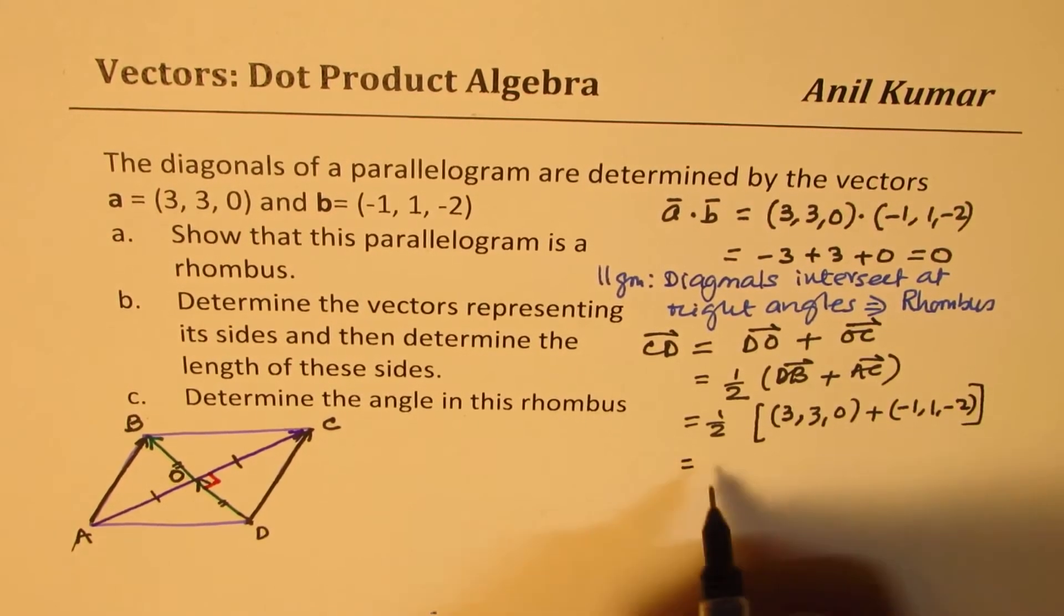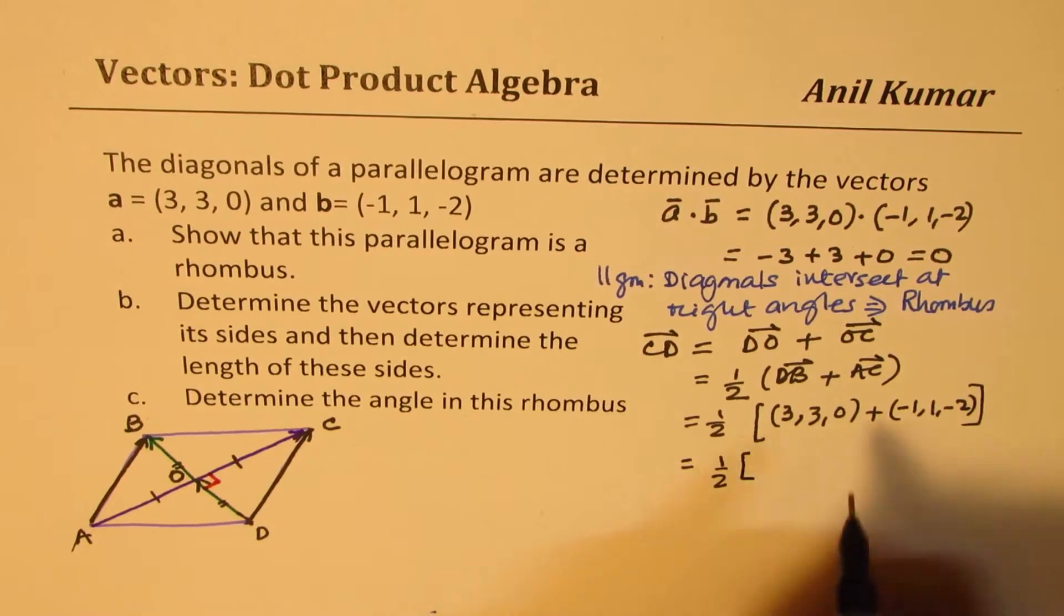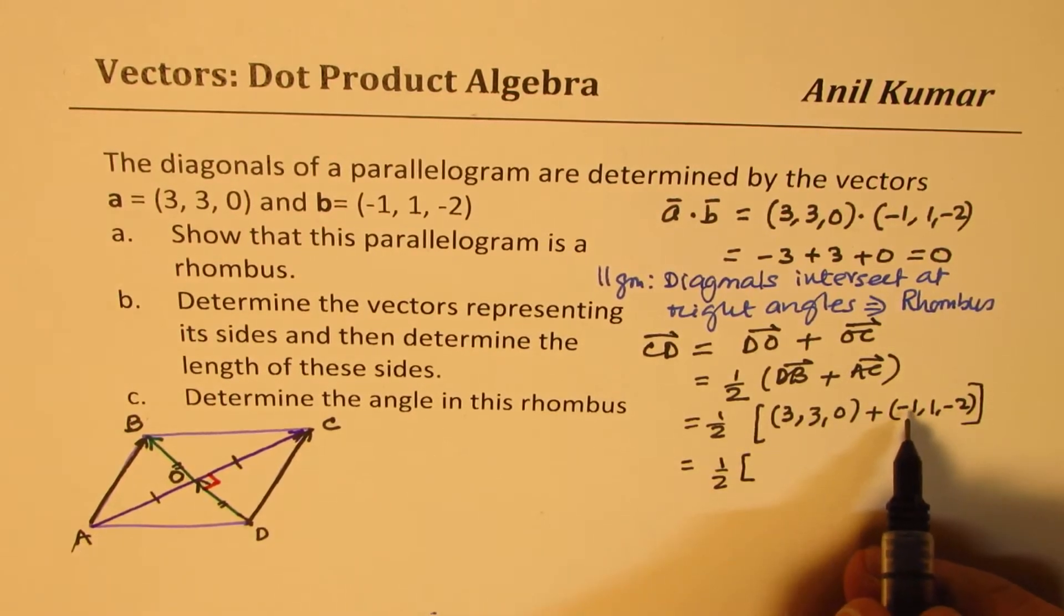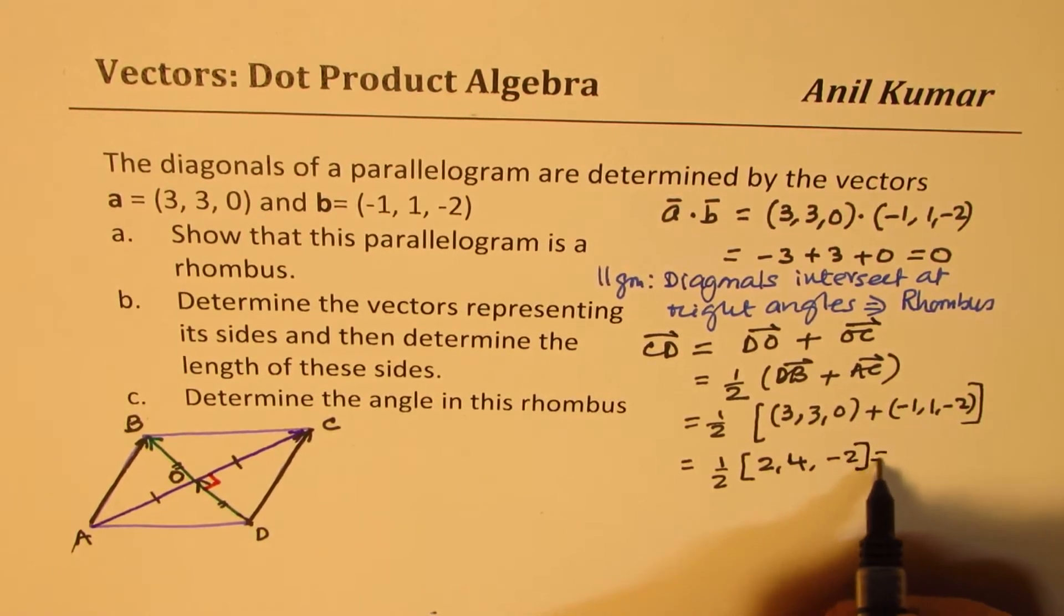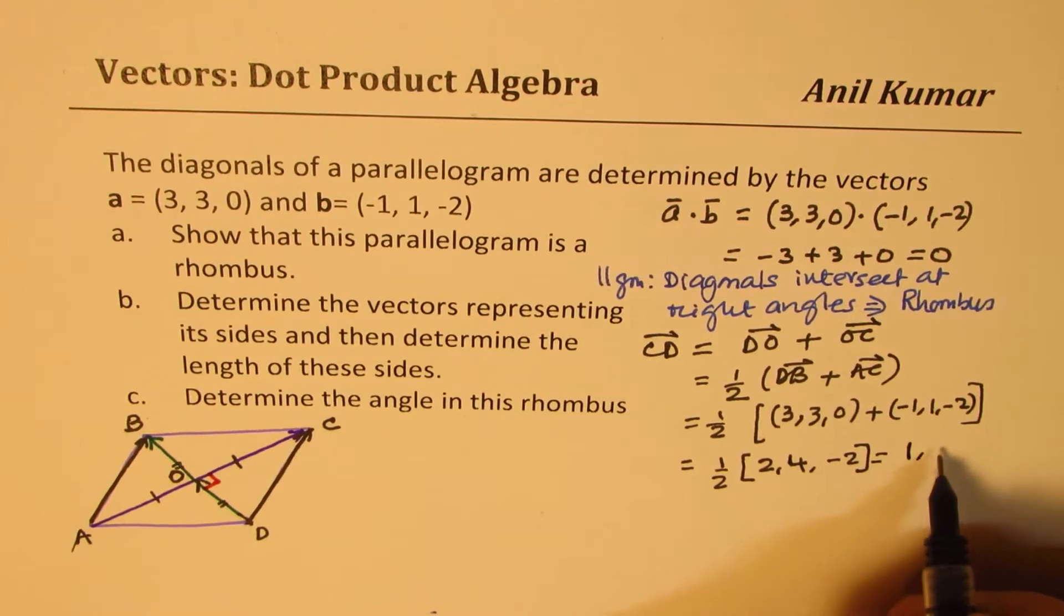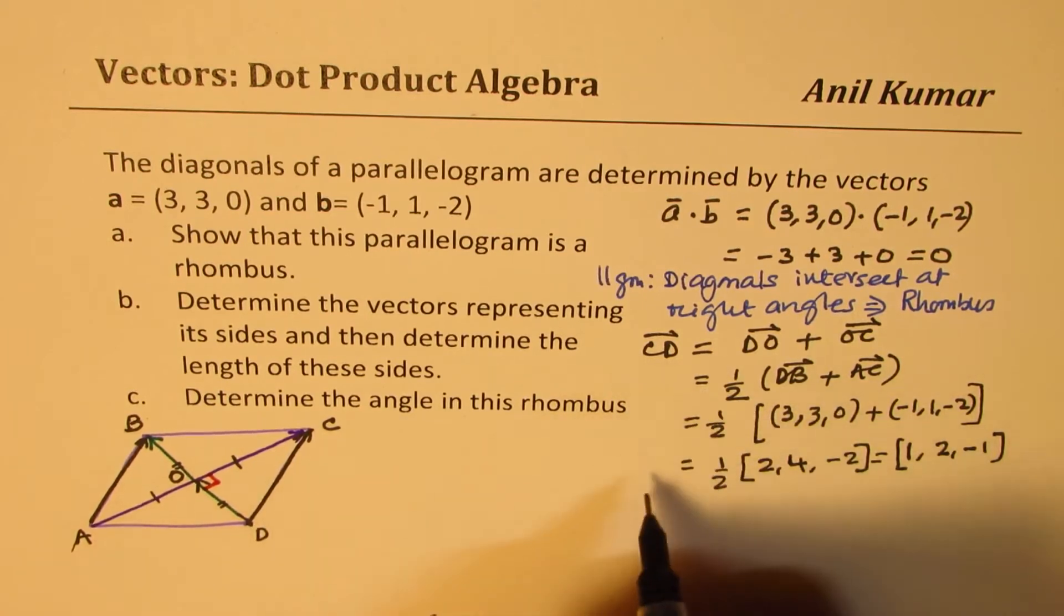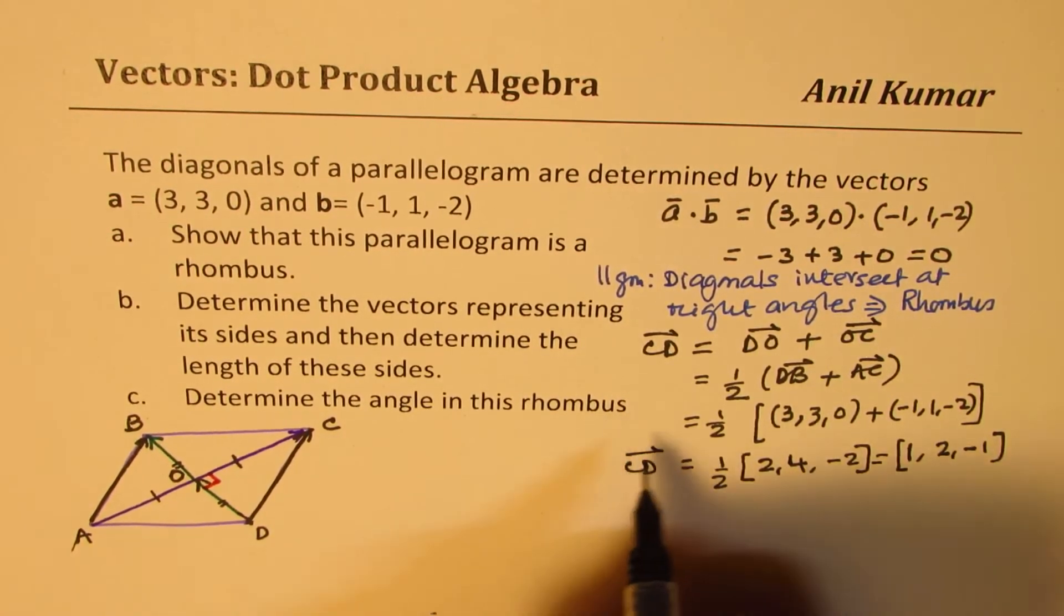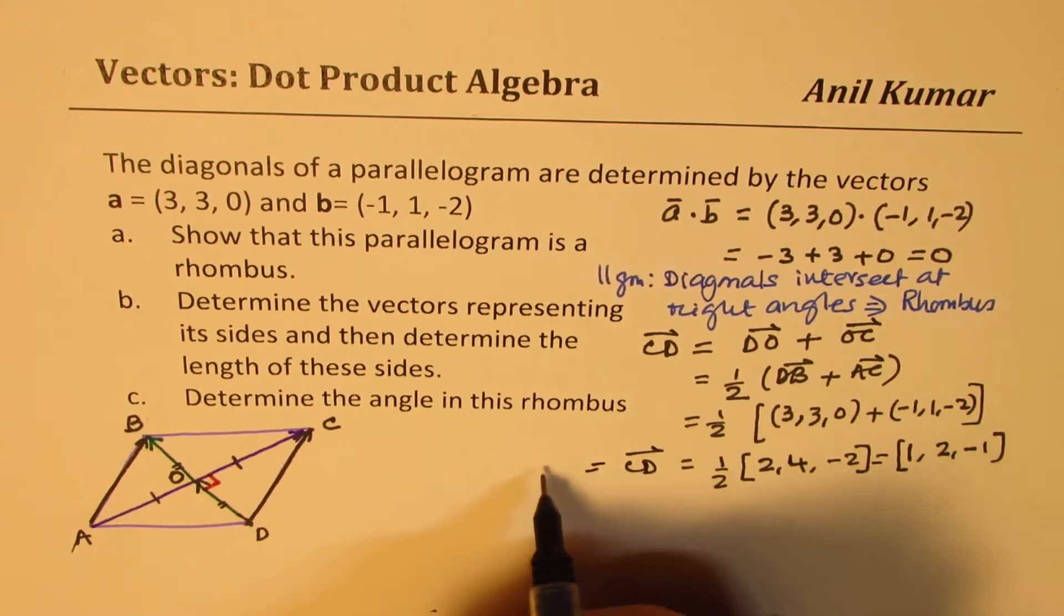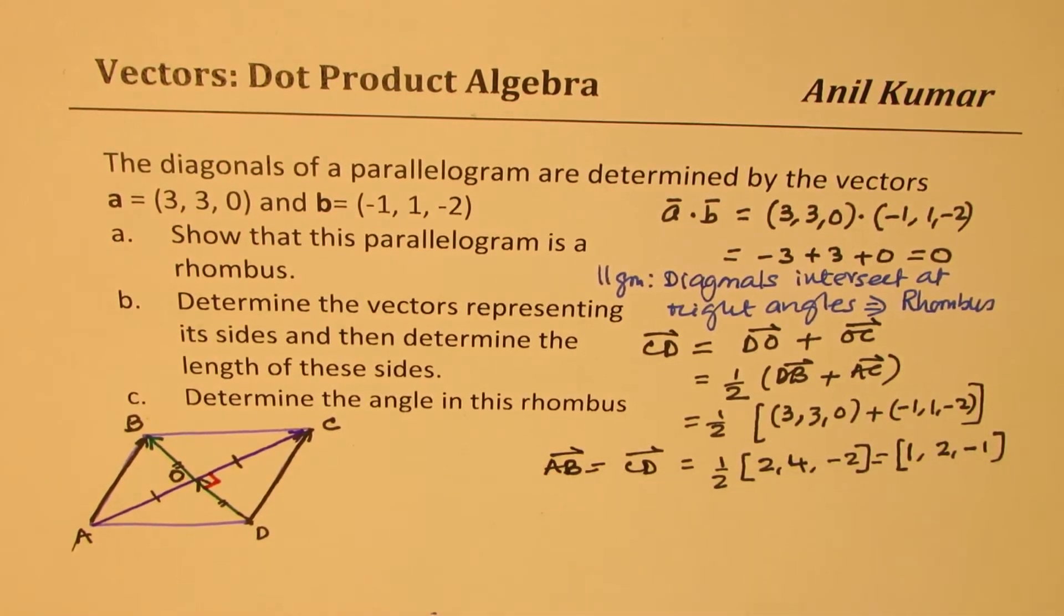So that is what it is. So it is half of what we get here is 3 minus 1 is 2. So 3 and 1, 3 and 1 when you add 4, 0 and this you get minus 2, which is equal to 1, 2, and minus 1. So that becomes vector C, D. C, D is also equal to A, B. Both vectors.